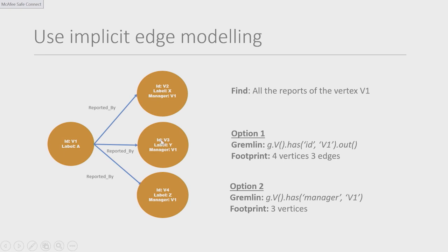Another example is explicit versus implicit edge modeling. The query is to find all reports of vertex V1. The simple graph traversal is g.V('v1').out(). But if all vertices have their manager information embedded within the vertex itself as a property, you don't need to traverse the graph at all. You can do a simple query like g.V().has('manager', 'v1') — finding all vertices with manager property v1 without traversing edges, reducing the footprint to three vertices from four vertices and three edges.